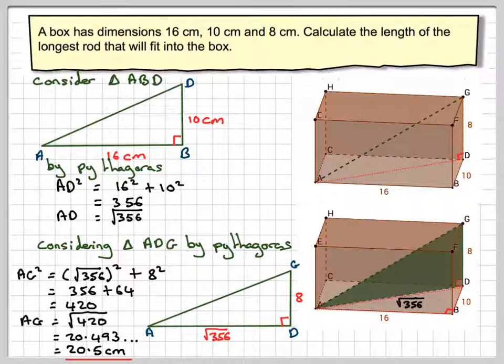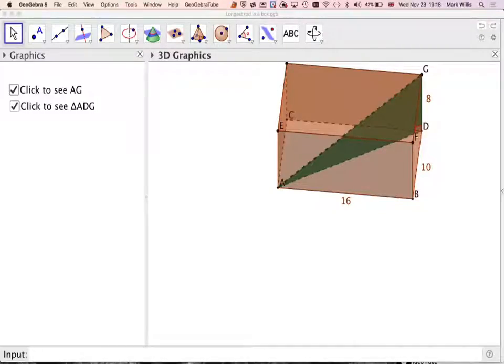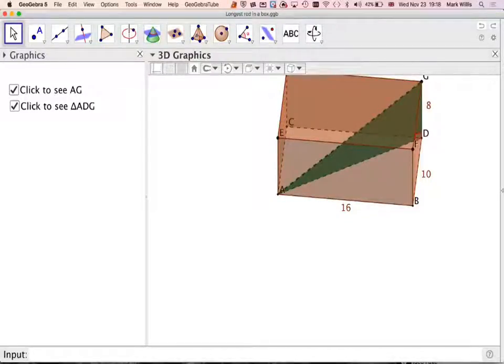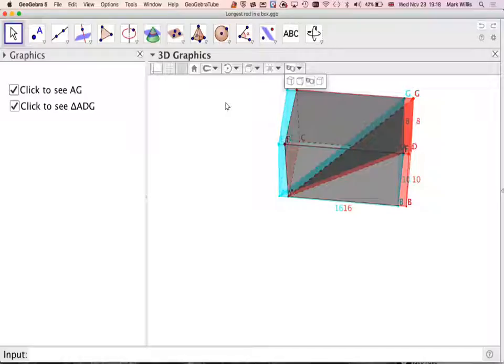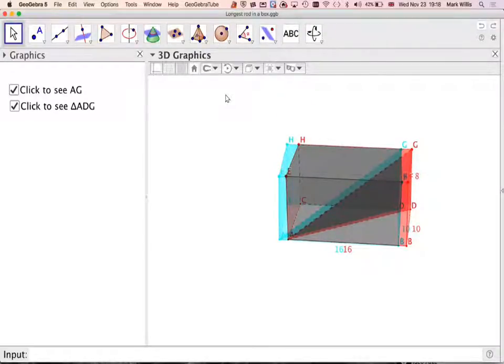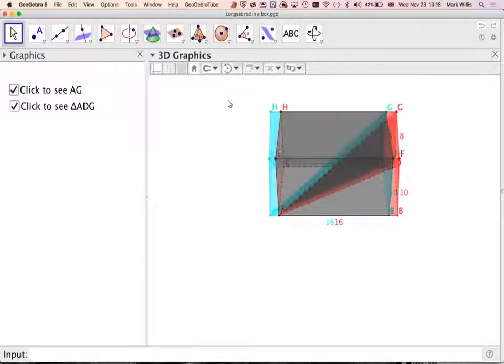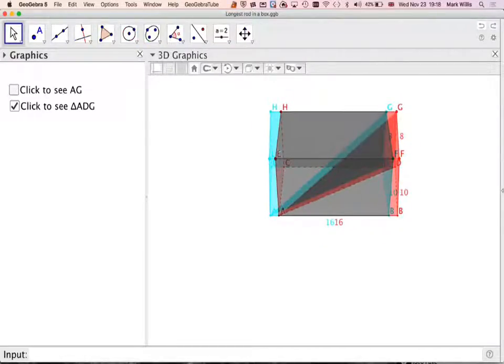Now, if we go back to the GeoAlgebra app, we can click on this here. And we can put the glasses on. If you've got some 3D glasses, you can put them on. And then you can see the triangle that we want. So if we just put this back to what it was.